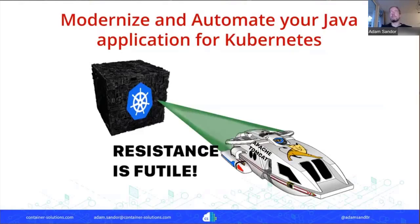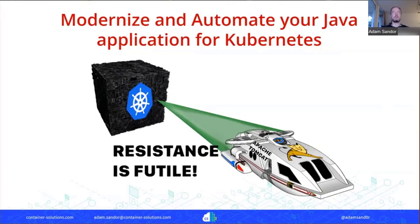Today I will be speaking about a topic that is very dear to me because I've been pushing an open source project for the past bit more than a year, which is aimed at building Kubernetes-native applications in Java. We will be turning Tomcat into a Kubernetes-native thing, illustrated here by the Borg cube assimilating — which is what Kubernetes is practically doing these days: it's assimilating everything.